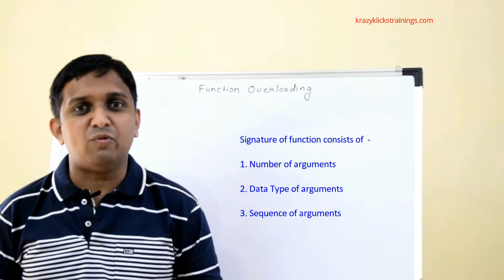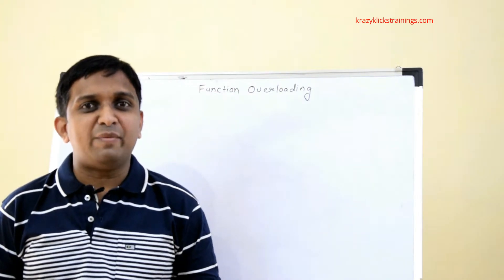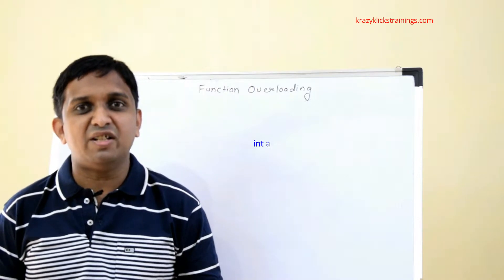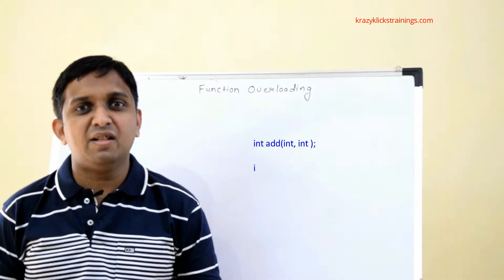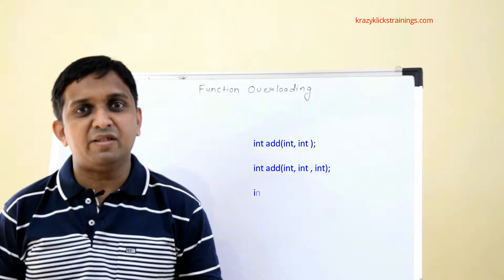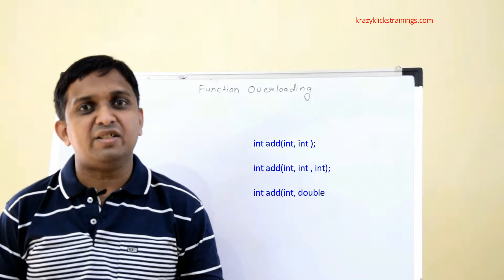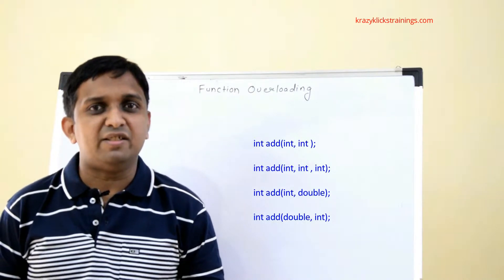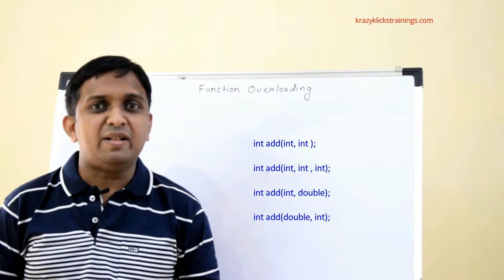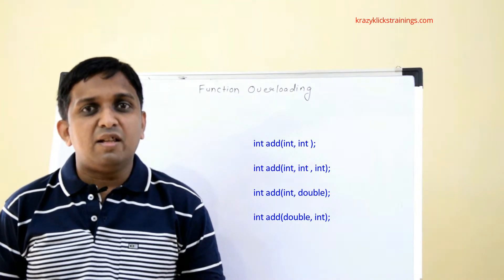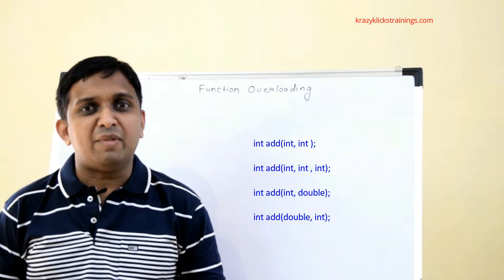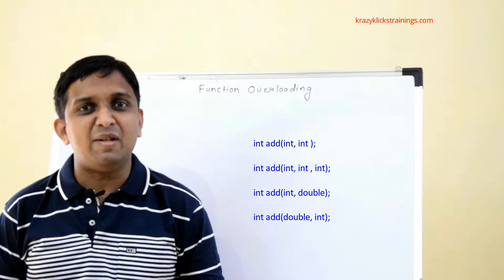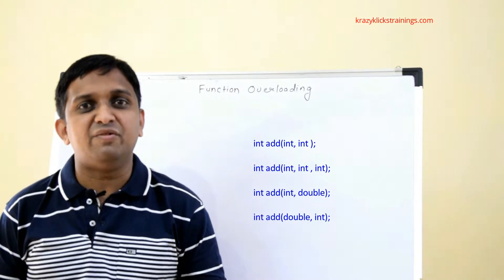Let's understand this concept with an example. Suppose I am writing four different functions with the name 'add'. The first add function takes two integer arguments, the second takes three integer arguments, the third takes one integer and one double argument, and the last add function takes a double argument and an integer argument. In my C++ program, all four functions can exist simultaneously because their signatures are different.